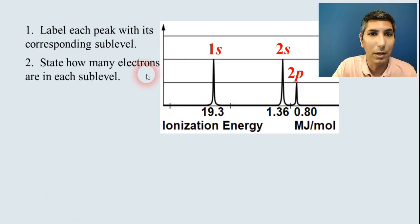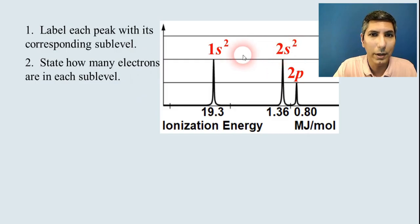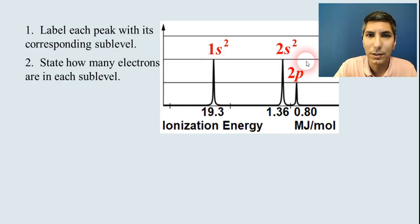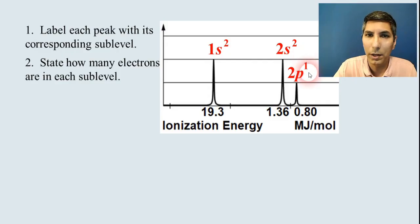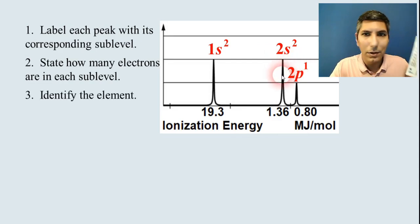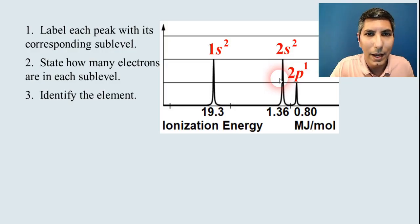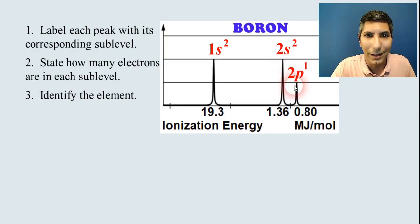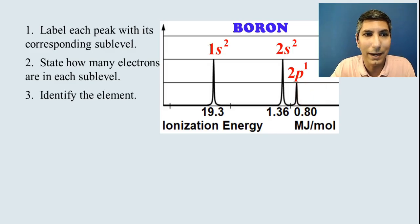How many electrons are in each sub-level? We know it goes 2 and 2 — 1s and 2s are always maxed out at 2. But this last peak is half as tall as the others, so it has half as many electrons, which means it's only got 1 in there. So it's 1s2, 2s2, 2p1. Which element is this? You can match it up on your periodic table, and that is boron. So if you can write an electron configuration, you can interpret a PES diagram.